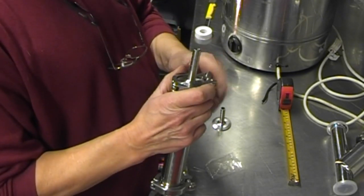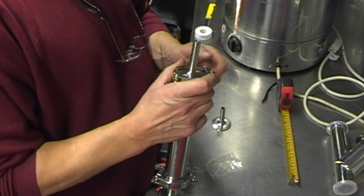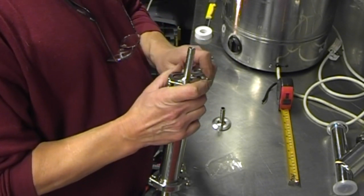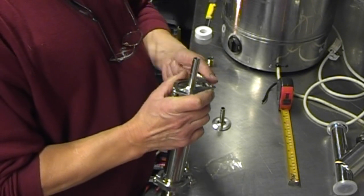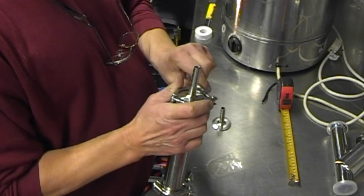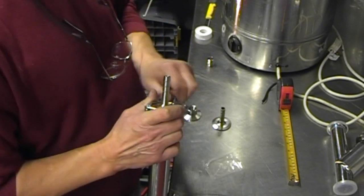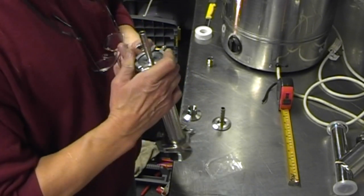So if you're using it for transferring from the fermenter, you've done a nice big old dry hop and you haven't put it in a bag, or maybe transferring from a mash tun, doesn't matter, you've got a hop screen in here.